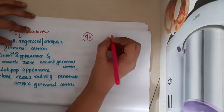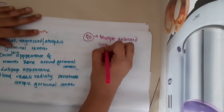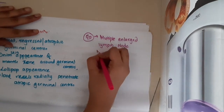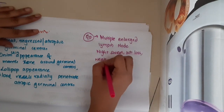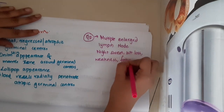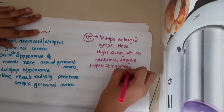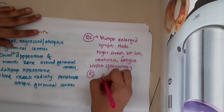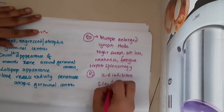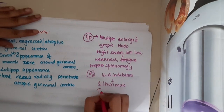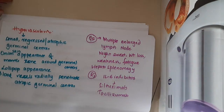Clinical features include multiple enlarged lymph node regions with night sweats, weight loss, weakness, fatigue, and hepatosplenomegaly. Treatment includes interleukin-6 inhibitors such as siltuximab and tocilizumab.